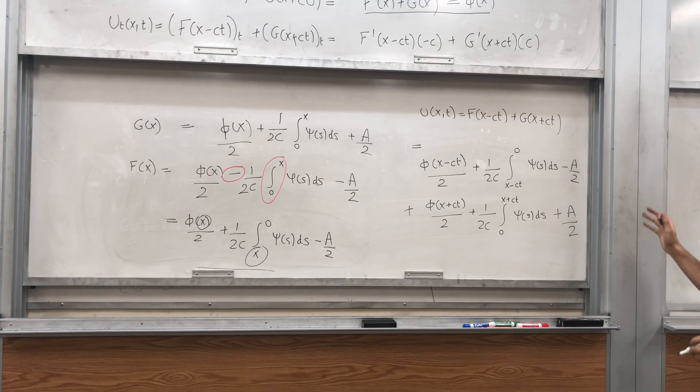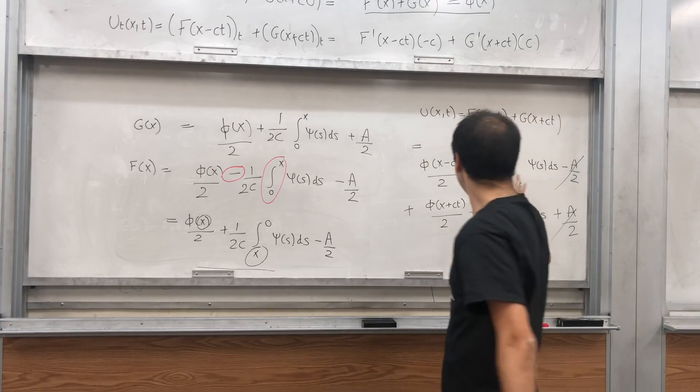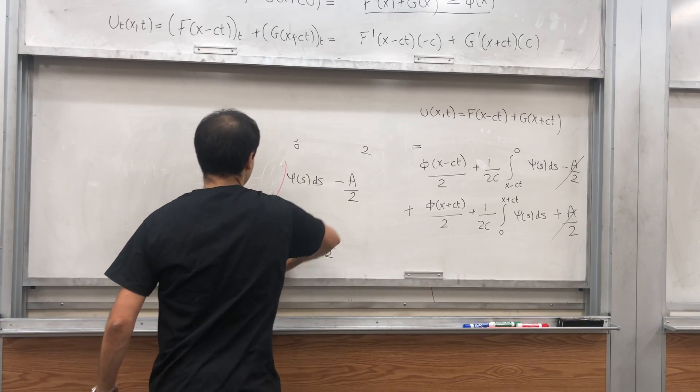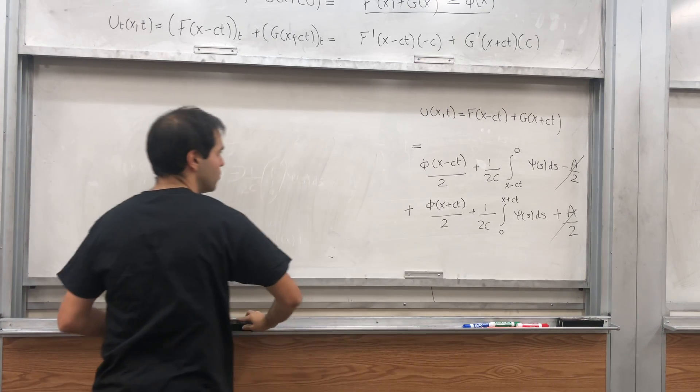So if you add them, the weird constants get cancelled out, and not only that, you actually have a nice simplification.